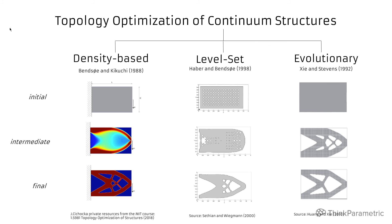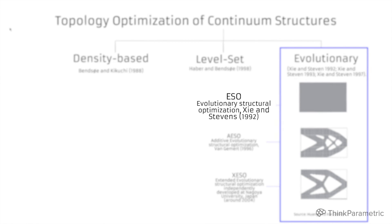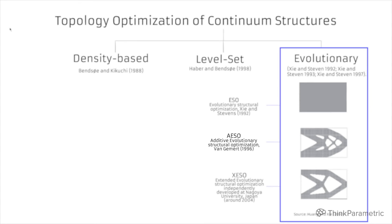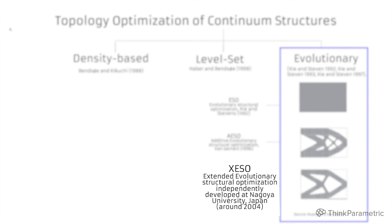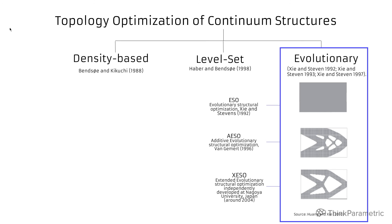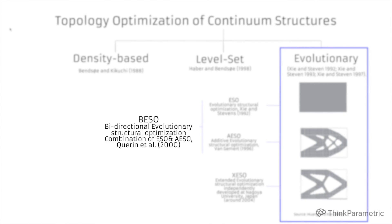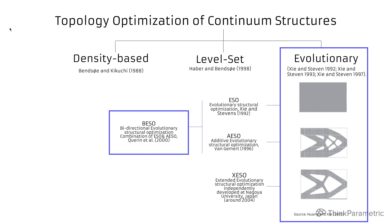In this course we focus on this evolutionary category but also to give you some background. Basic evolutionary optimization has also some subcategories. So ESO can just remove elements. ESO can add elements. CESO is an extended version that works a little bit similar to the level set. And in Karamba we have implemented BESO. So bi-directional evolutionary structural optimization that can both add and remove elements. And this will be the topic for the next presentation.